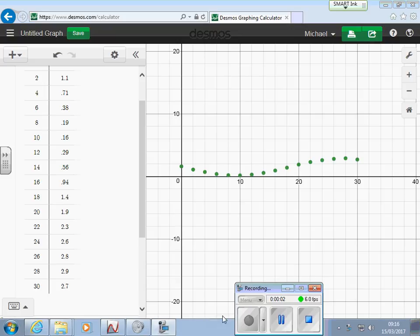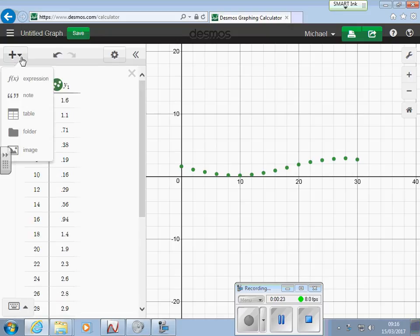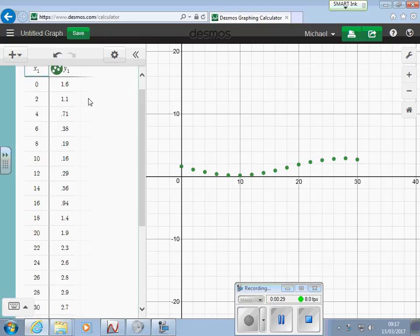What you've got there is some example data, similar to the Simon data, but different. What I've done is I've put that into the online graphing software Desmos as a table.